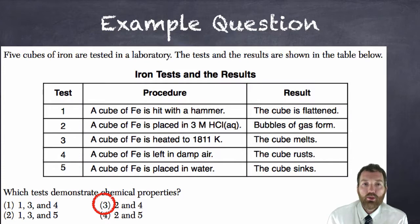Test four says a cube of iron is left in damp air and the cube rusts. Well we just talked about that. The ability to rust is a chemical property because when you're done, the rust or iron oxide has different chemical properties, different chemical composition than the original iron.